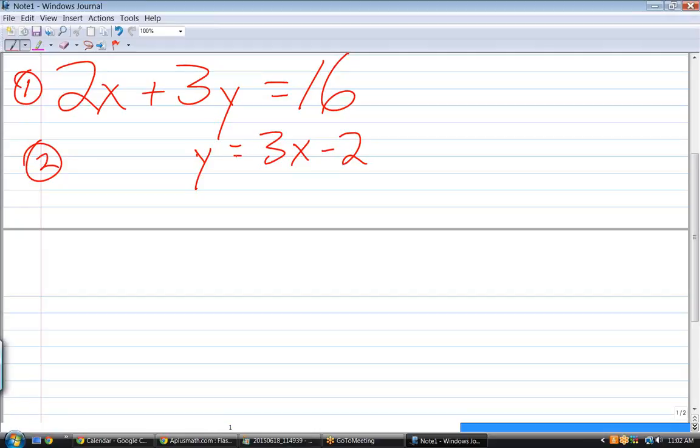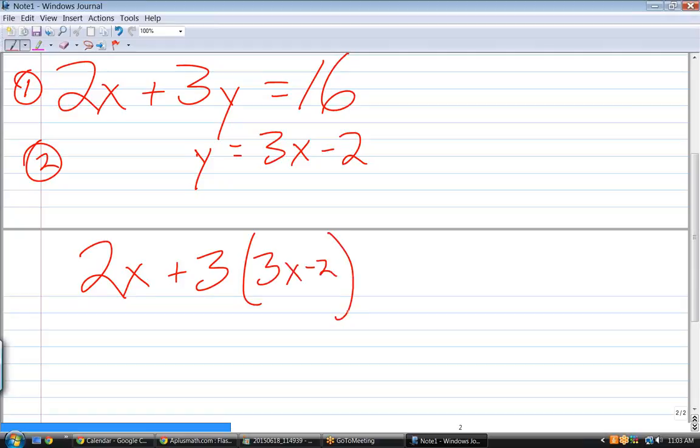Because the bottom one is fully defined in terms of y, I can substitute. In other words, I can rewrite equation one as 2x plus 3, and instead of y, I'm going to write this thing here that I know y is equal to. So that is now equation one. You with me? Yes.